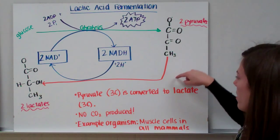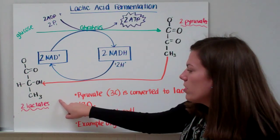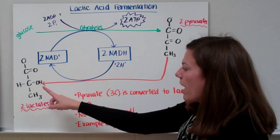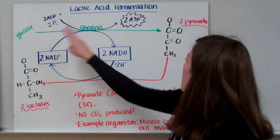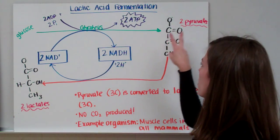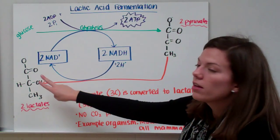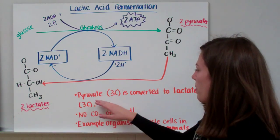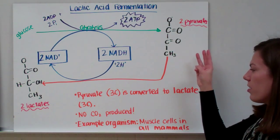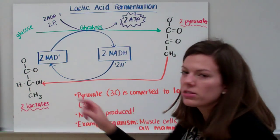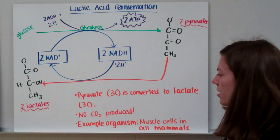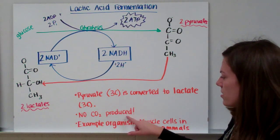So we're taking our pyruvate and we're converting it to two lactates. So for each pyruvate, we get one lactate, but since we get two pyruvates from our glycolysis, we take our two pyruvates to make two lactates right here. So our pyruvate, which is a three-carbon molecule, is converted to lactate, which also has three carbons. So we're not losing anything as carbon dioxide here. So no carbon dioxide gas is produced.